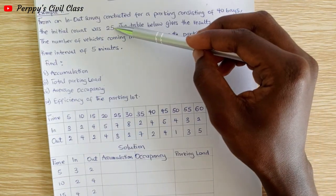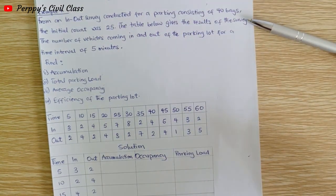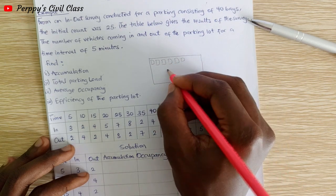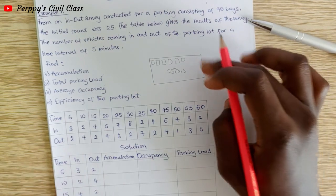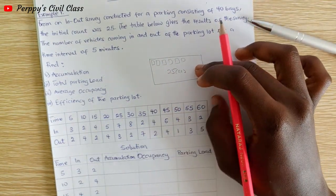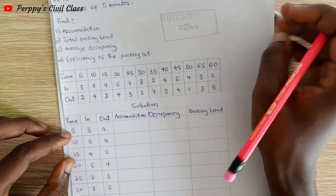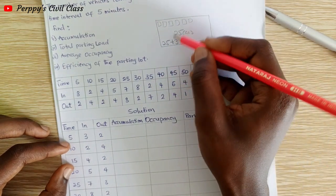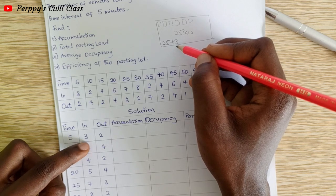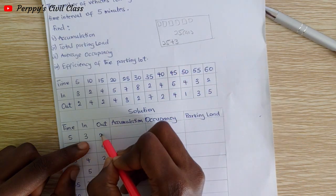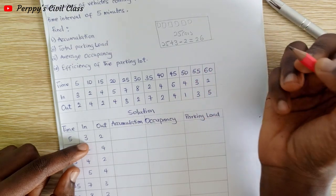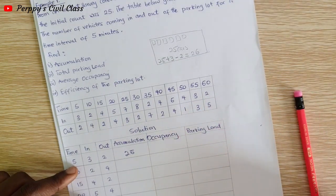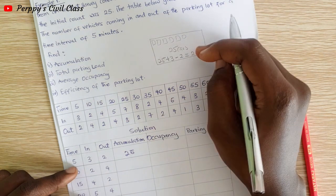The initial count from the question is 25 — so initially we have 25 cars parked in the parking lot. Within the first 5 minutes, 3 cars entered, making it 25 plus 3 = 28. Then 2 of them left, so 28 minus 2 = 26. So the accumulation for the first 5-minute interval is 26.